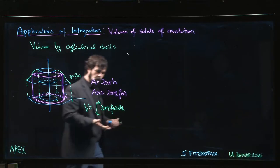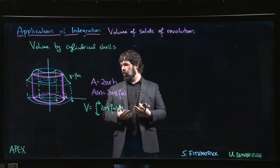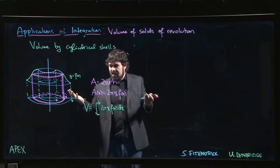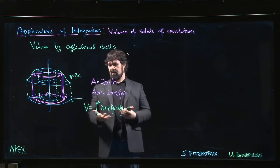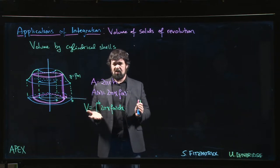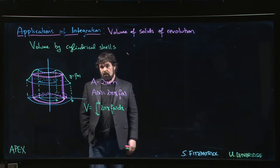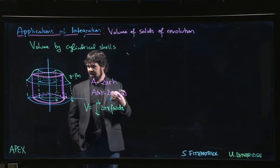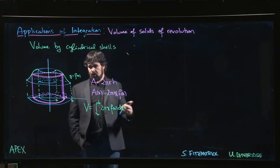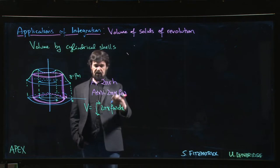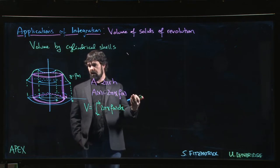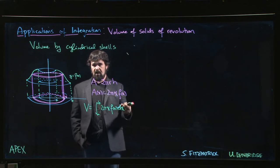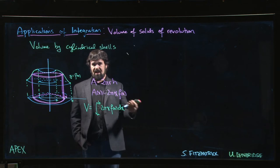The other reason might be that to do washers we would have to express x as a function of y, and maybe that's algebraically inconvenient. Maybe this is a much easier integral ultimately—that's what it boils down to. You choose the approach that will take you less work. You have to do enough problems to gain some intuition. Try to figure out, based on the functions you're dealing with and the shape of the region, which of the two methods is going to give you the least trouble.